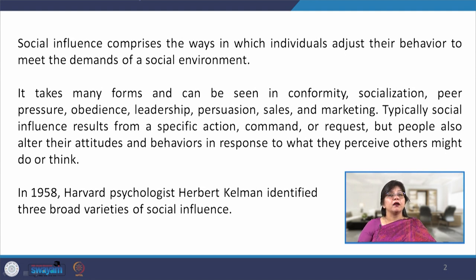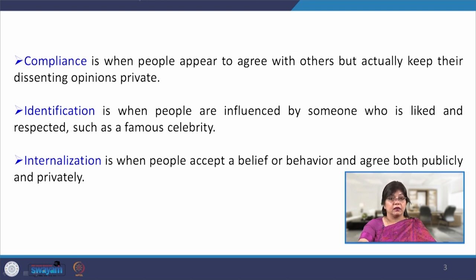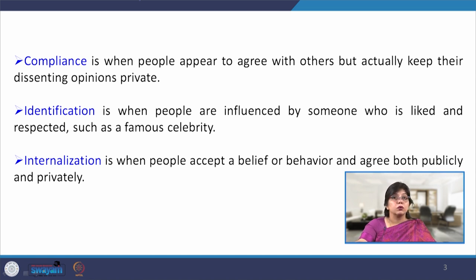In 1958, Harvard psychologist Herbert Kelman identified three broad categories of social influence. Compliance is when people appear to agree with others but actually keep their dissenting opinions private. They tend to comply with the group decision — perhaps they are not in favor of a particular decision, but to adhere to the group, maintain membership, and maintain social relations with other members, they comply with what others say or do.